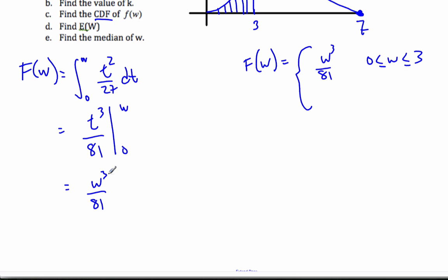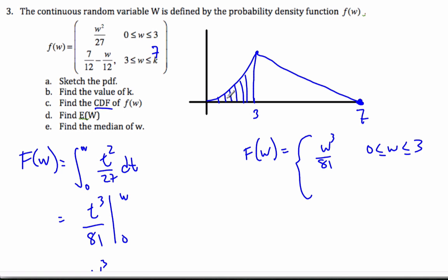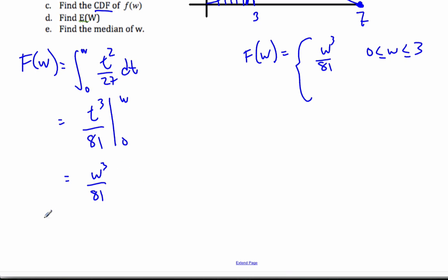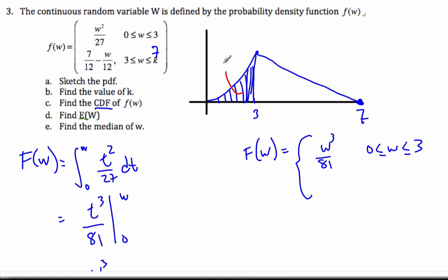I want to look at the second part now. But in order to find the second part, I have to add on this first area onto the second part. So I need to find out what this area is. I'm going to let W equal 3, which will represent this value. So then I have 3 cubed over 81, which is indeed, if I simplify that, 1/3. I know that this particular area here is equal to 1/3.